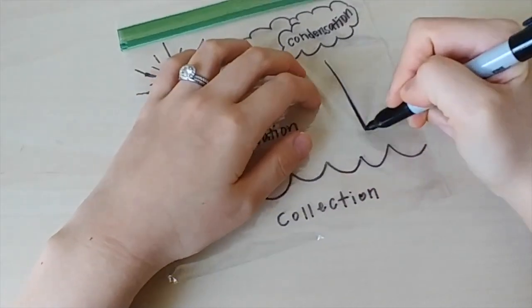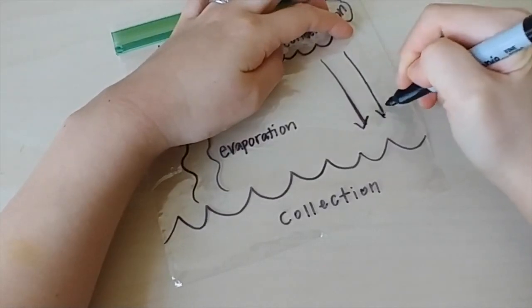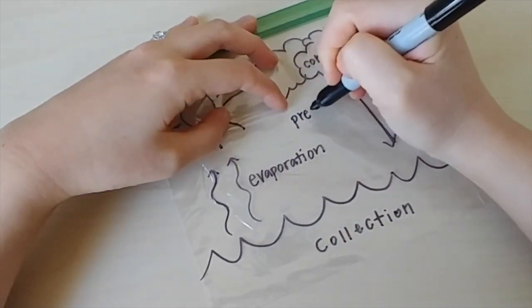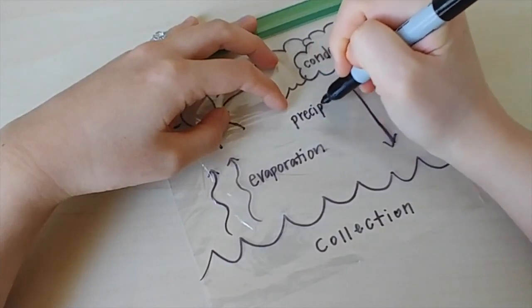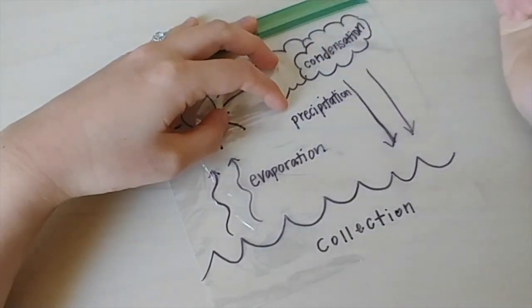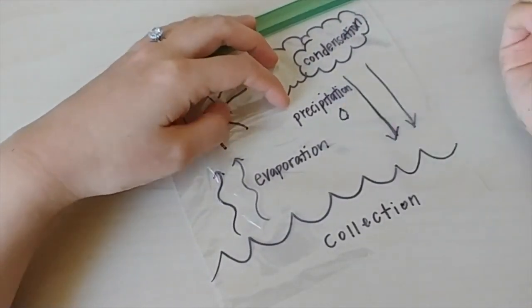Next draw some arrows pointing downwards from the clouds to the ocean because we are showing the final process of precipitation. When the water droplets get too heavy they precipitate downwards in the form of snow, sleet, hail, and rain.